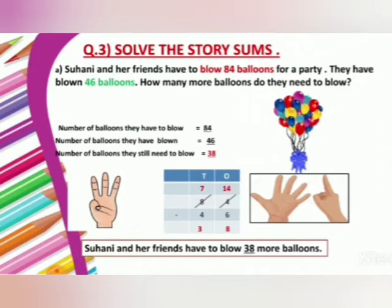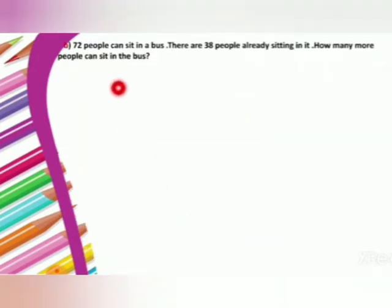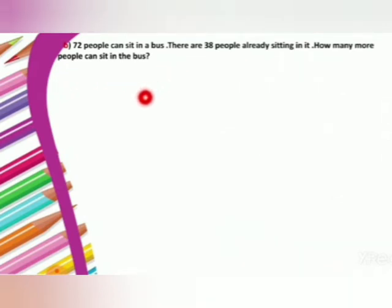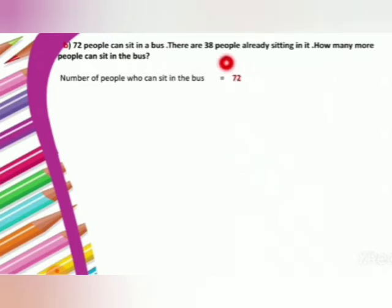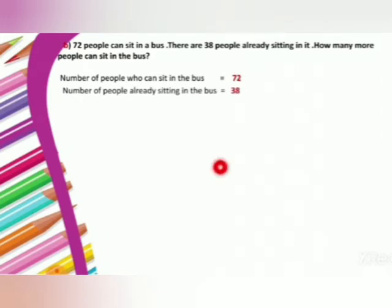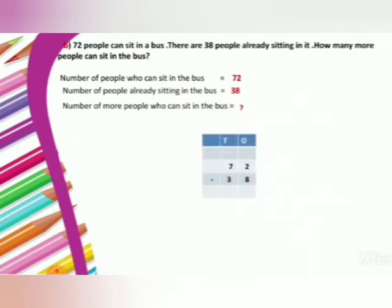Let's move to the second sum. 72 people can sit in a bus. There are 38 people already sitting in it. How many more people can sit in the bus? We have to find the number of people who can still sit in the bus. Number of people who can sit in the bus — total — is 72. Number of people already sitting is 38. We have to find how many more people can sit.